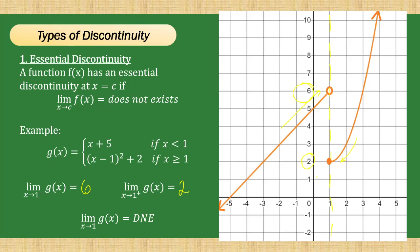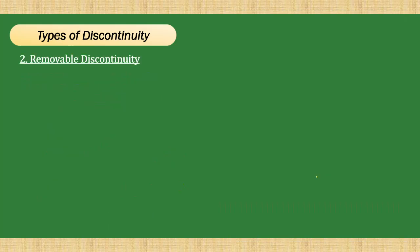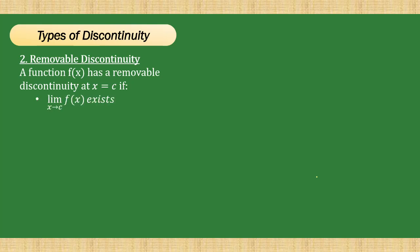The second type of discontinuity is removable discontinuity. We still have a function f of x and a value x equals c. It is discontinuous if the limit of f of x as x approaches c exists; however, either f of c does not exist, or its value is not equal to the limit.